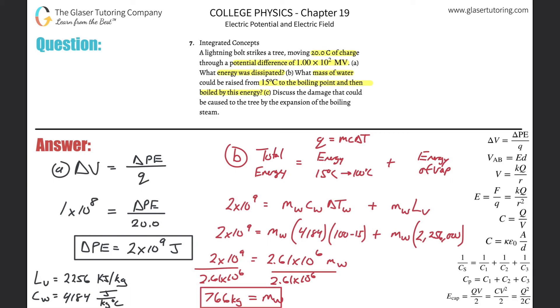There we go. Alright, so that's basically the mass. Letter C now says discuss the damage that could be caused to a tree by the expansion of boiling steam. It'll explode. Guys, thank you very much for tuning in. Please remember to help us out and subscribe. Explode on that like button—I'm not sure if that was the right word to use there, but just hit it, I guess. Okay, take care.